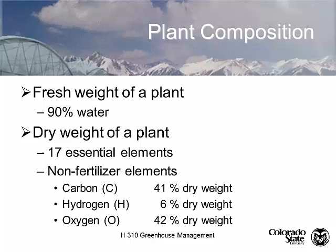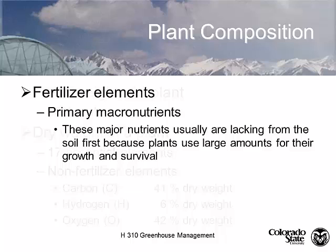The non-fertilizer elements are very essential: carbon is 41% of the dry weight of a plant when you take the water out, hydrogen is 6% of the dry weight, and oxygen is 42%. These are primarily found in our carbohydrates.